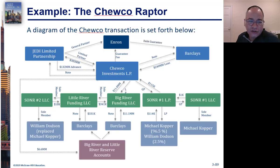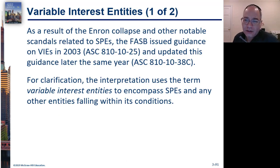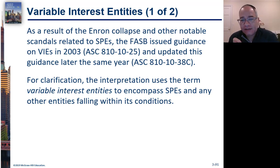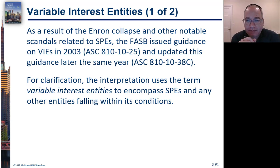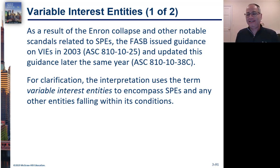The entire thing unraveled until they came up with a billion dollars in losses — and this is just one example. There were a lot more, and it was truly a fiasco. As a result, the FASB looked at their SPE problem and came up with something new called VIEs — variable interest entities.